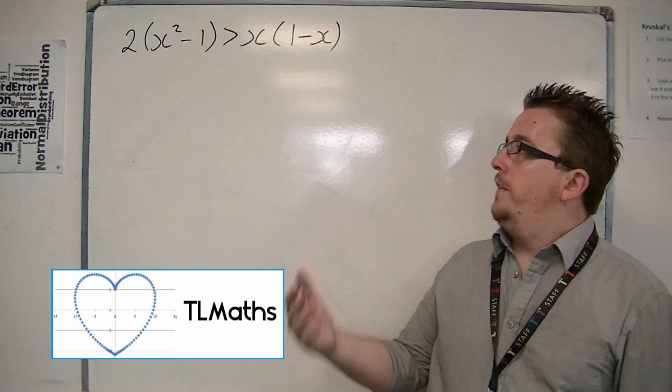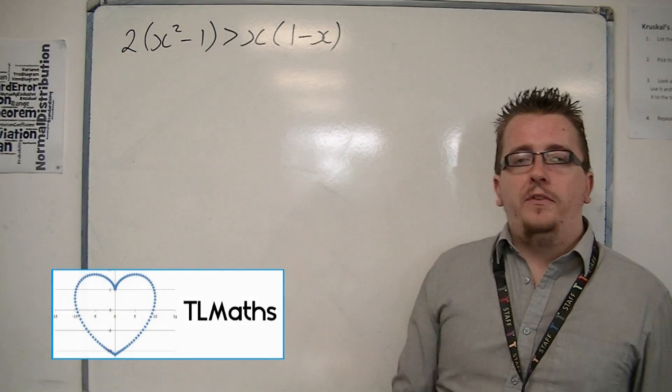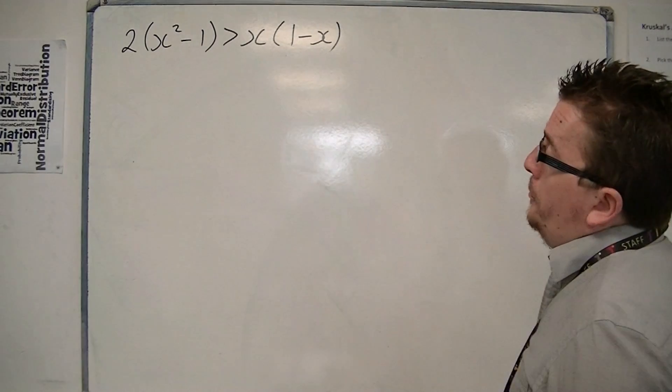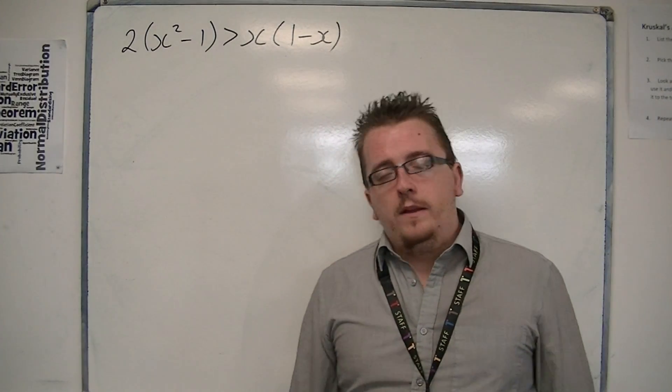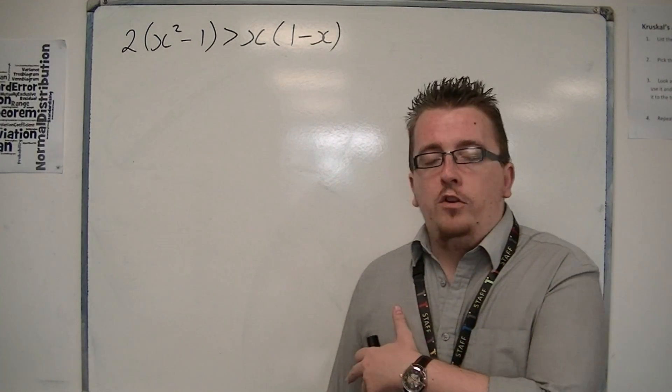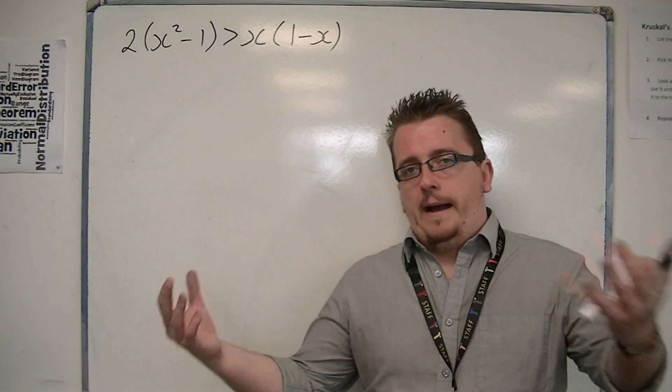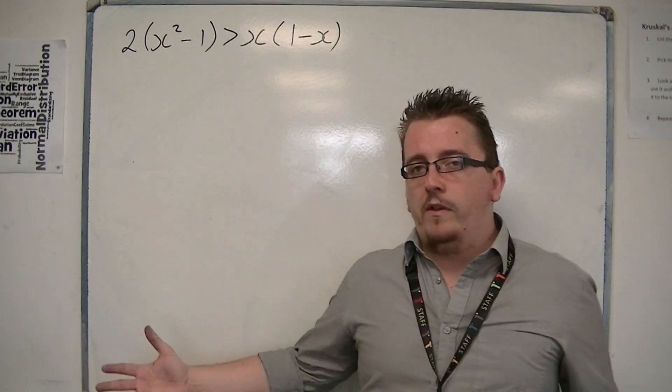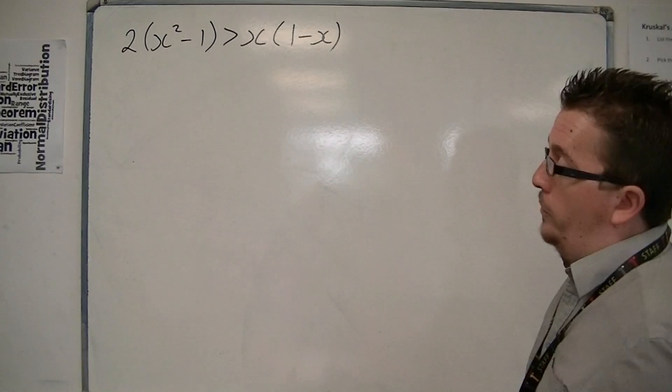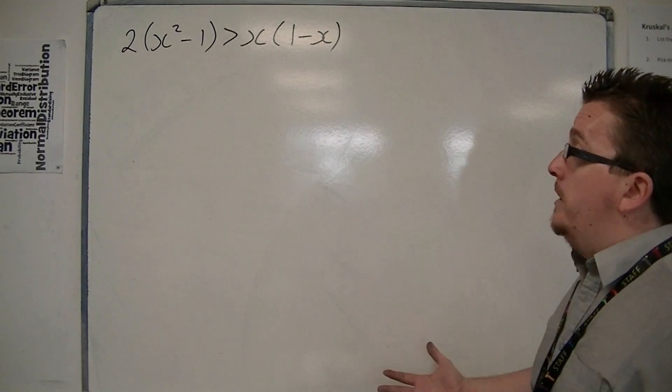Now, if you have to deal with a quadratic inequality that looks like this, there shouldn't be much of a problem. The only thing is you're going to be multiplying out brackets and rearranging everything so it's all on one side of the inequality. So that's what I'm going to do first.